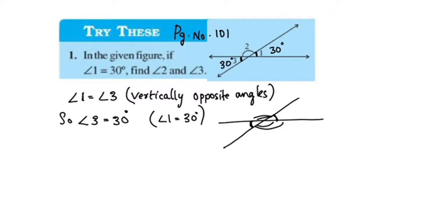We have angle 2. This is a straight line. It is a linear pair. Angle 3 and angle 2 form a linear pair.